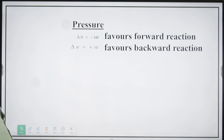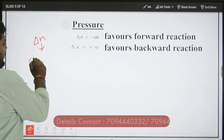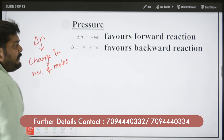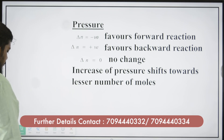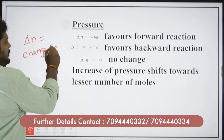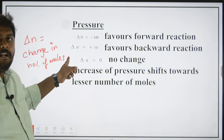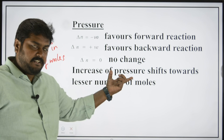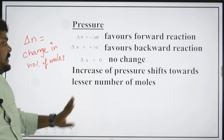Next is pressure. Pressure depends on del n — that is the change in number of moles. If del n is negative, it favours the forward reaction. If del n is positive, it favours the backward reaction. If del n is zero, there is no change. Increase of pressure favours a lesser number of moles. Decrease of pressure shifts towards a higher number of moles.